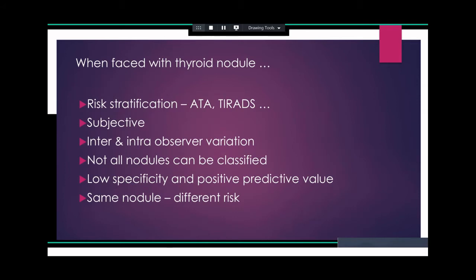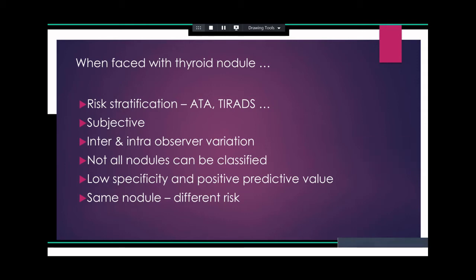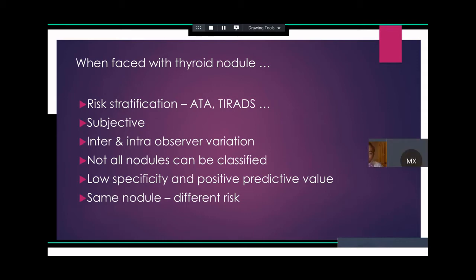When faced with a thyroid nodule, we have multiple options: watchful waiting, biopsy, or surgery. The risk stratification can be done using different algorithms like ATA, TYRADS, KI TYRADS, or the RUSS system. They are very subjective, with inter- and intra-observer variation, and we cannot classify all nodules with all available classification systems. For example, an isoechoic or hyperechoic, well-defined, wider-than-tall nodule with microcalcification and internal Doppler flow does not really fall into any ATA category, but it could be a follicular cancer or follicular variant of papillary thyroid cancer.